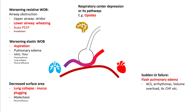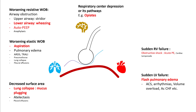The cardiac causes include sudden LV failure or sudden RV failure. In LV failure, you should be noticing flash pulmonary edema, and it's seen in patients with acute coronary syndromes, arrhythmias, volume overload, acute heart failure, etc. In RV failure, you are possibly thinking about acute pulmonary embolism and pulmonary hypertension.